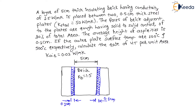For the steel plates, they have given 0.5 cm thickness. Therefore this distance is 0.5 cm on both sides. The thermal conductivity of steel is 50 W per meter Kelvin. The outer plate surface temperatures are 100°C and 500°C respectively. We need to calculate the rate of heat transfer per unit area.